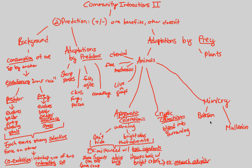Batesian mimicry is defined as when a defenseless species protects itself by resembling — not actually being — but by resembling a dangerous species. A good example would be a non-venomous snake and a venomous snake. The non-venomous snake is the mimic, and it is mimicking the venomous snake, which is considered the model. That non-venomous snake is prey to other organisms, and so it mimics something venomous — that is Batesian mimicry.